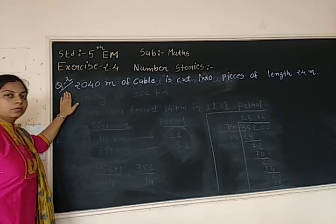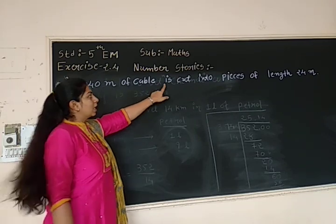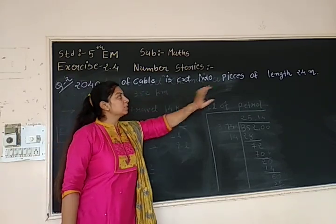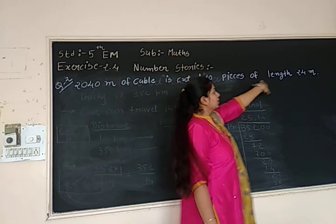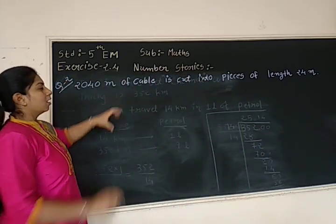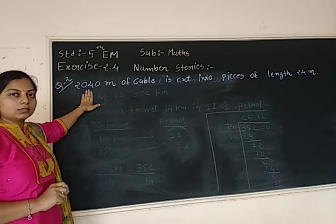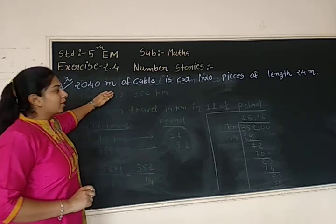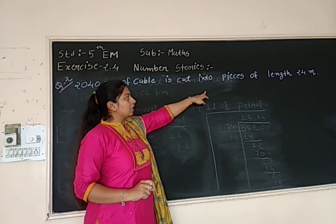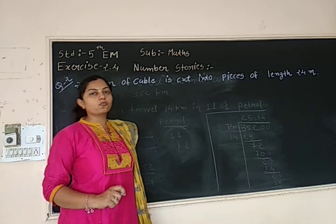Question number 2. 2040 meters of cable is cut into pieces of length 24 meters. What is written? A cable is there whose total length is 2040 meters. That cable is cut into pieces of length 24 meters each.